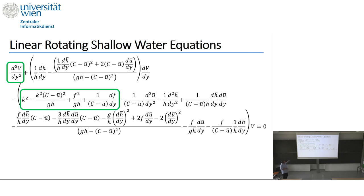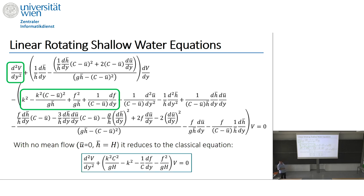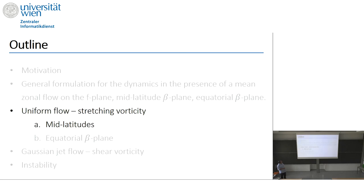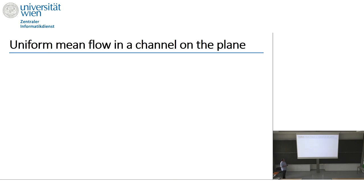Having derived this formulation, we now go to specific cases. The first case is for uniform mean flow, which involves stretching vorticity. It is divided into two parts: the mid-latitude beta plane and the equatorial beta plane.